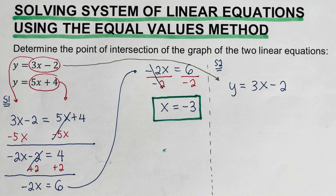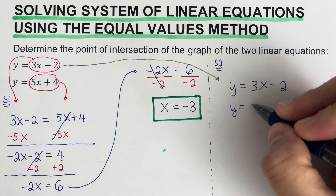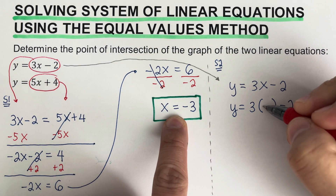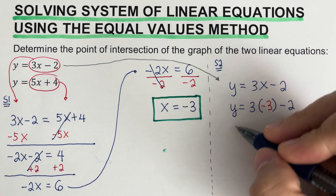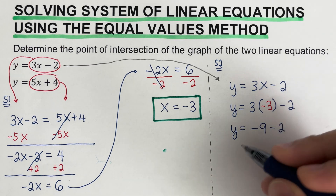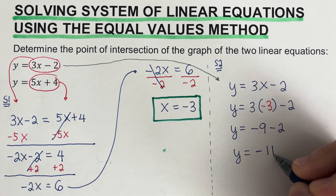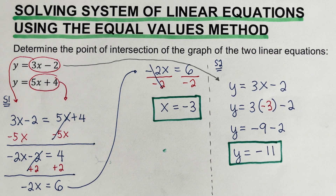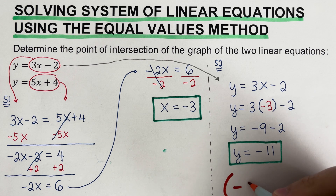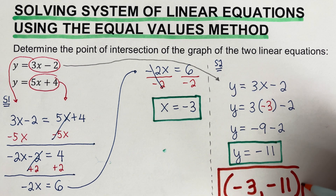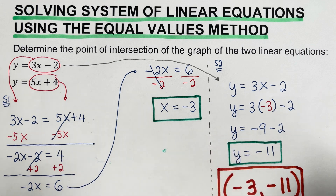The first equation is y equals 3x minus 2. We plug in the x we solved from Step 1, which is negative 3, so y equals 3 times negative 3 minus 2. That gives y equals negative 9 minus 2, which is negative 11. Writing the solution in coordinate form, the answer is negative 3 and negative 11.